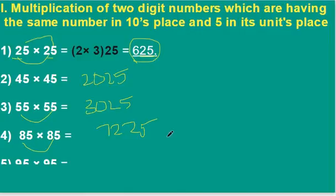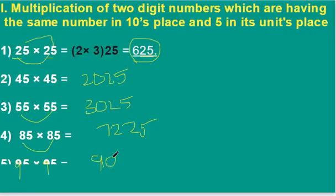Here, 95 into 95: for this, 9 into 10 is 90, and last two digits are 25, therefore our answer is 9025.